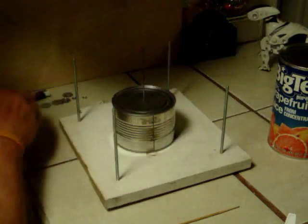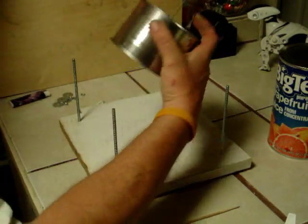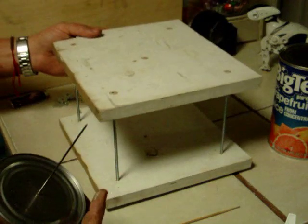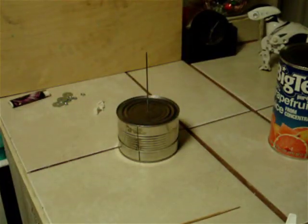All right. We got the nuts and washers off and the top off. And here's our Stirling engine displacer and compressor. There we go. Set that right here.